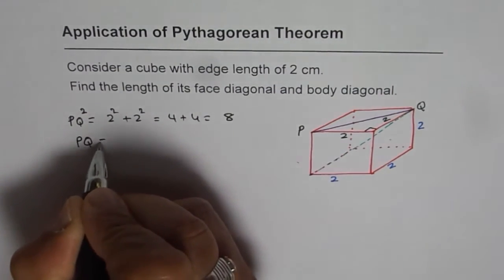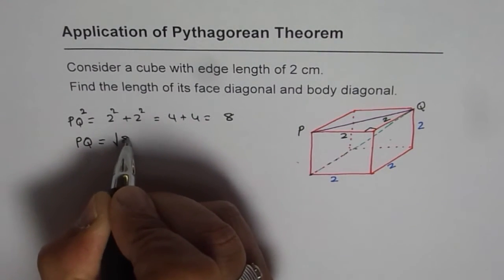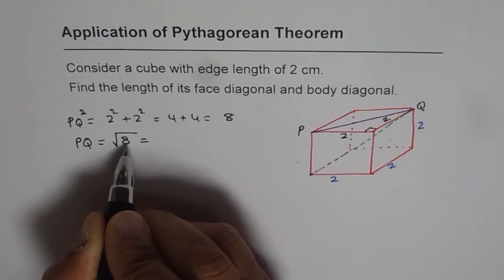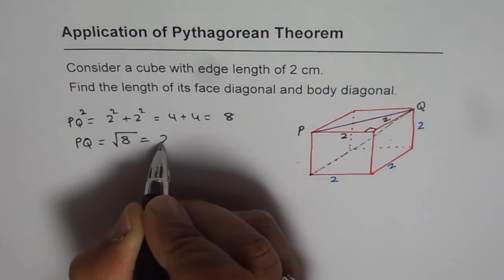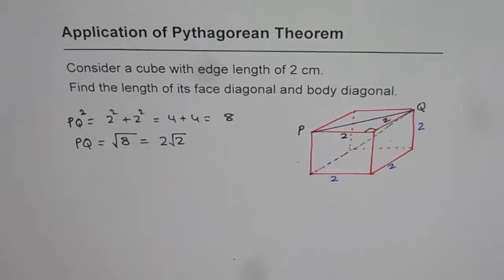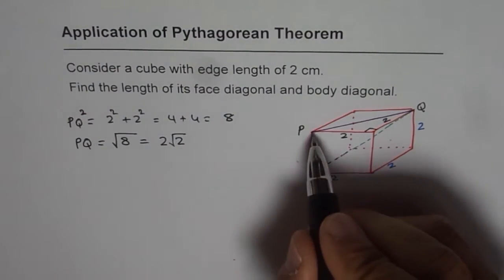So PQ, the face diagonal, is square root of 8. Which you could write as 8 is 2 times 4, so you can write this as 2 square root of 2 also. So that is the length of PQ.